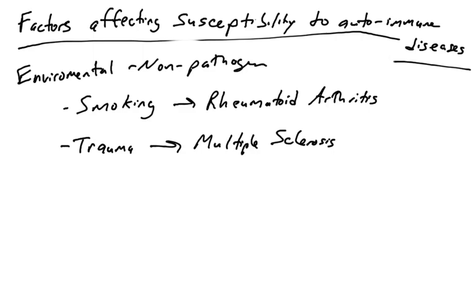Trauma could also possibly lead to autoimmune disorders. There is some evidence that individuals who suffer concussions or other physical brain injuries have higher rates of multiple sclerosis. Possibly, the trauma unleashes an immune response in the nervous system targeting and destroying the cells wrapped around neuronal axons. There is evidence correlating brain trauma and concussions with increased risk of multiple sclerosis. These are some examples of factors that affect susceptibility to autoimmune diseases — there are more, and these are just a few.